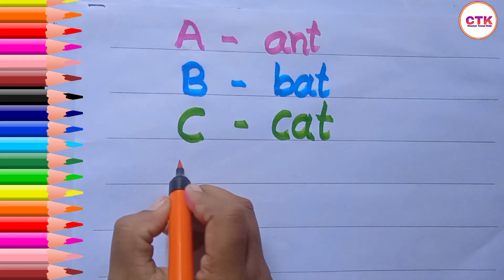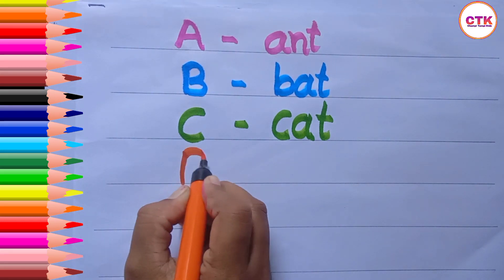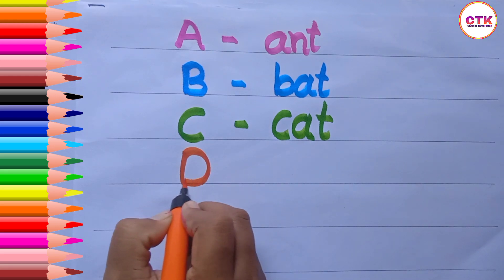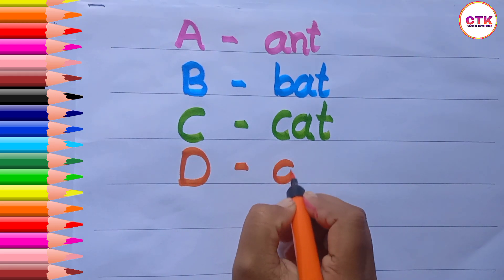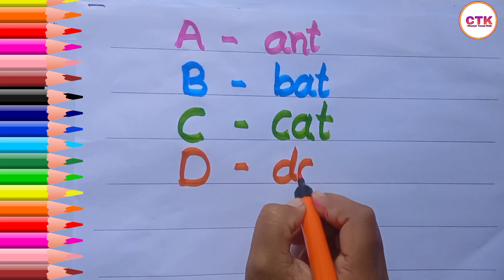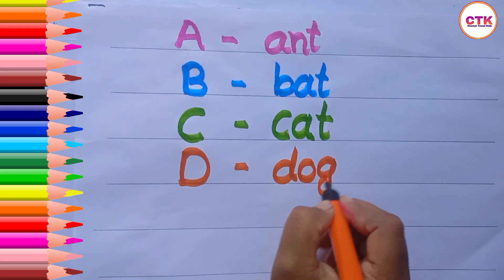This is orange color. D. D for dog. D, O, G — dog.